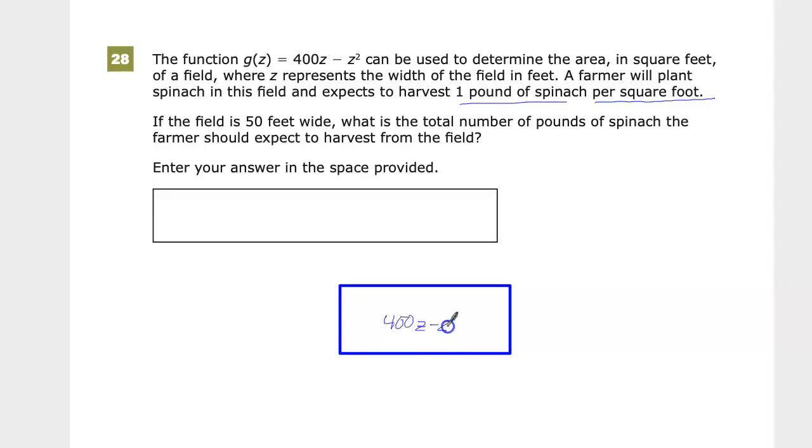having an area of 400z minus z squared, the nice thing is they do tell me that the width is z, so it's over here. So I need to start thinking, okay, I have the area. So what's the area formula for a rectangle? Well, it's length times width. And if I know that the width value is z,